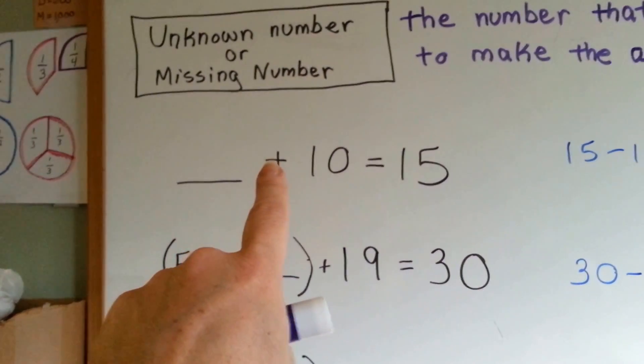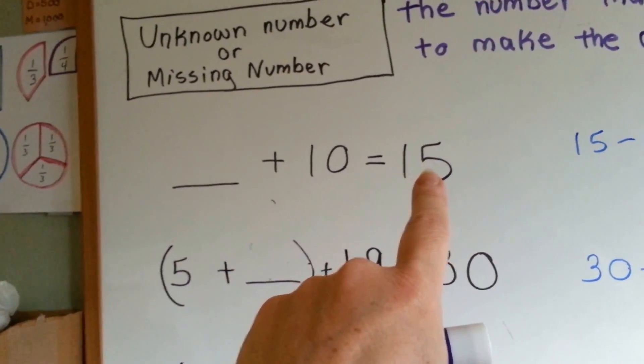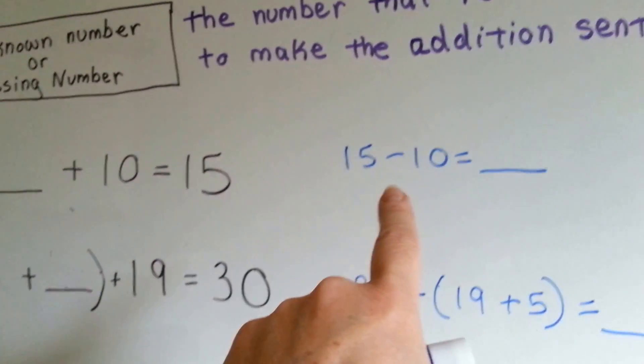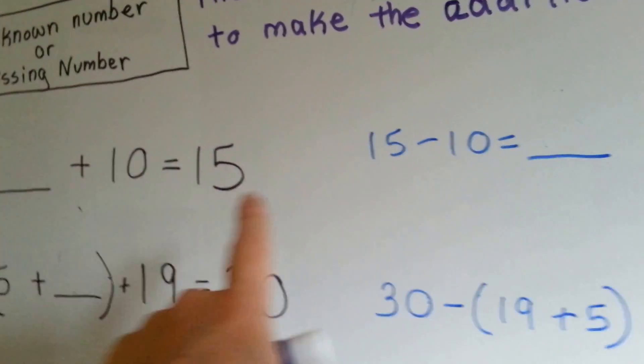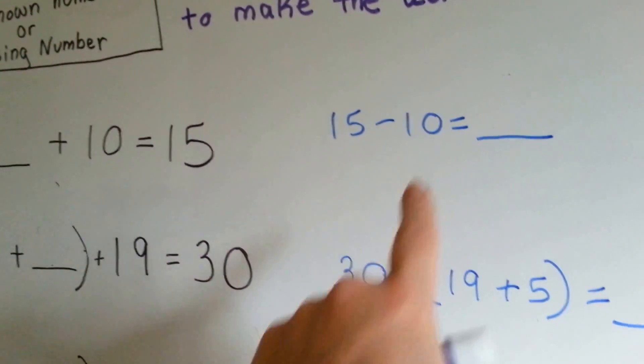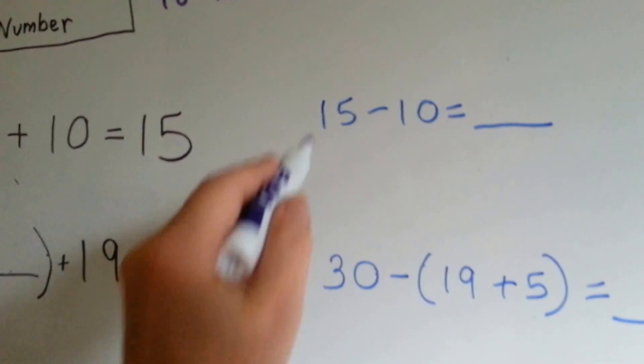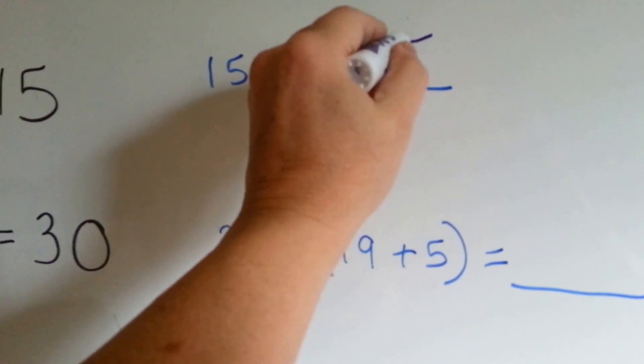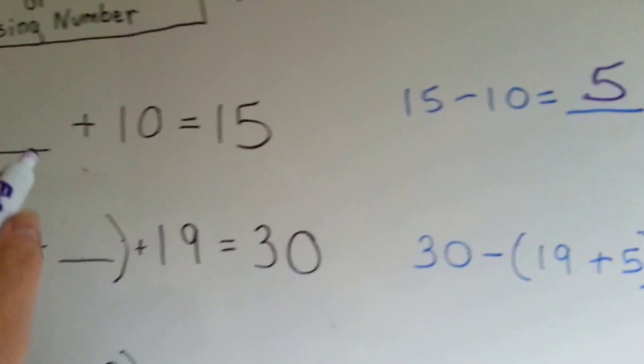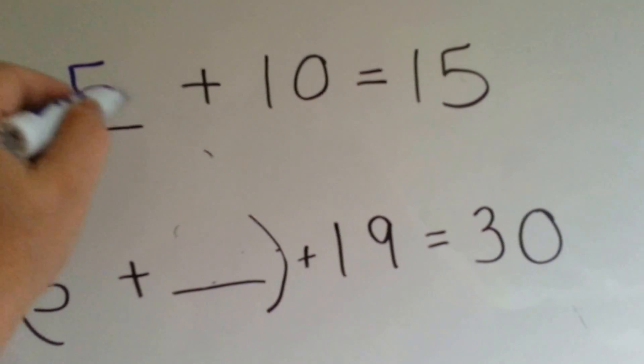So let's take a look at this one. Blank plus 10 equals 15. So what we're going to do is use subtraction to help us find it. 15 take away 10 equals what? 15 take away 10 is equal to 5. So we know that the missing number here is 5.